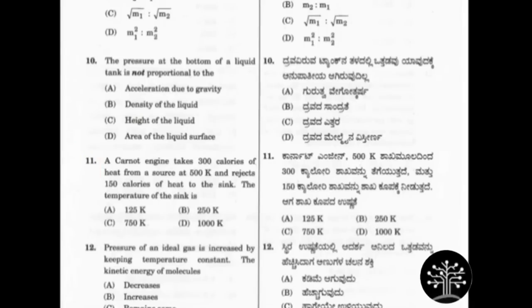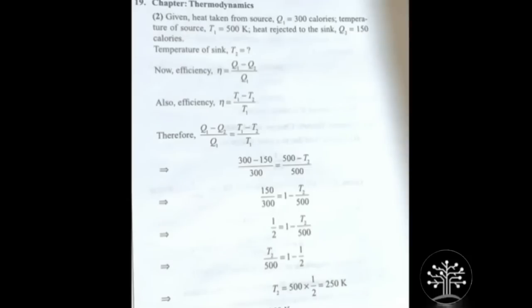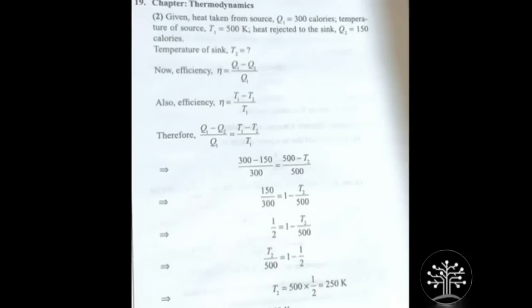For the 11th question, count each and every individual digit — either from the first or from the last. From the last, only 5 and 0 appear in options B and D, so decide the correct answer among option B and option D. Digit 2 is repeated in other options, so option B is the correct option — the answer is 250K. This is from Thermodynamics.